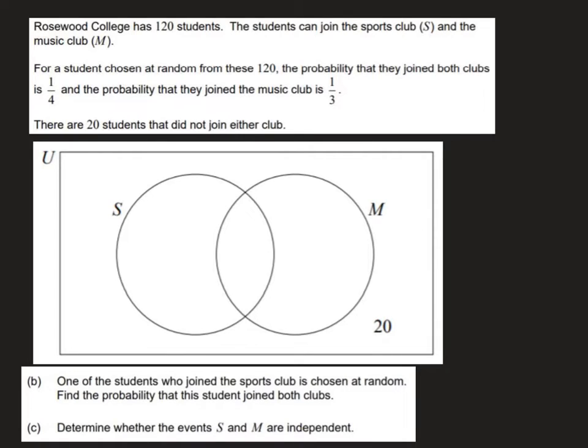Question five is on probability and Venn diagrams. We are told that at Rosewood College there are 120 students and they can join the sports club and the music club or neither.